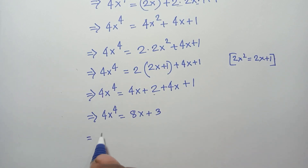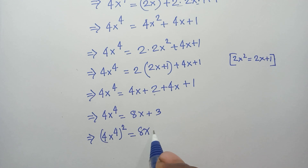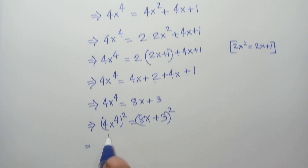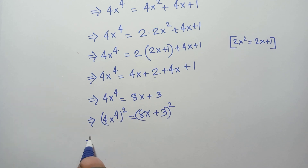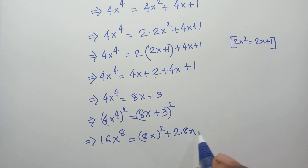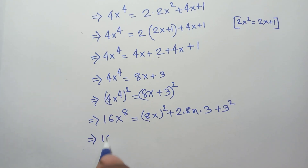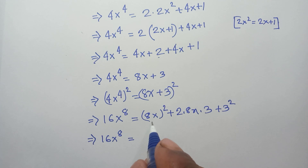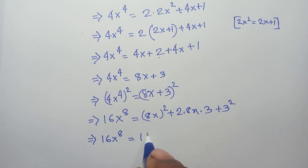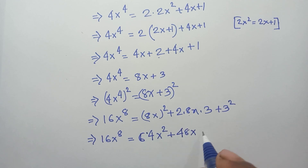Squaring both sides of 4x⁴ = 8x + 3: (4x⁴)² = (8x + 3)². The left gives 16x⁸. The right expands as (8x)² + 2·(8x)·3 + 3² = 64x² + 48x + 9. So 16x⁸ = 64x² + 48x + 9.